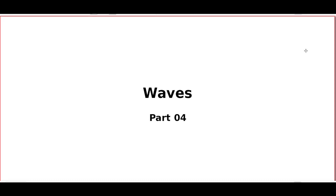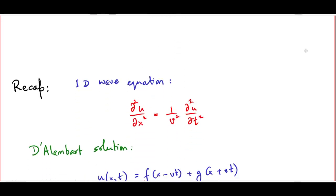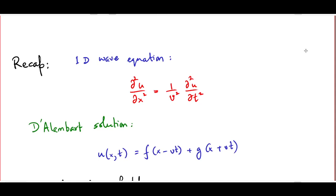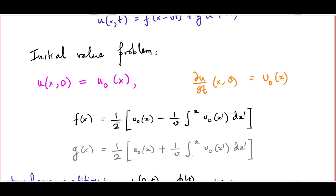Welcome to the fourth lecture of my series on waves. In the previous two lectures we have been taking a look primarily at the solutions of the wave equation in one dimension, and in particular we have been using extensively the D'Alembert solution: u is given by a smooth function f of x minus vt plus another smooth function g of x plus vt. We have seen that initial value problems, where the initial value of the wave at t equal to 0 is specified as u0(x) and its first time rate of change, the velocity, is described at t equal to 0 by v0(x), then f and g can be calculated in terms of u0 and v0 using those equations.